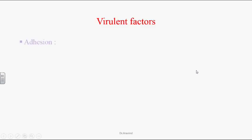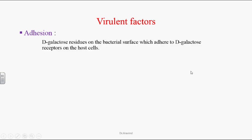Virulence factors — Adhesion: Listeria organisms have galactose molecules on their bacterial surface which adhere to galactose receptors on the host cells.